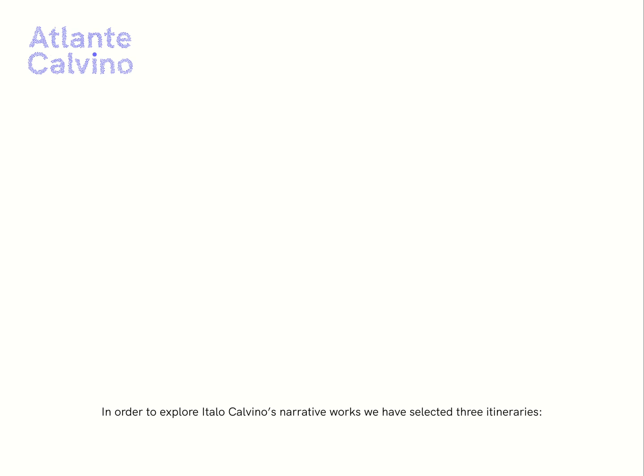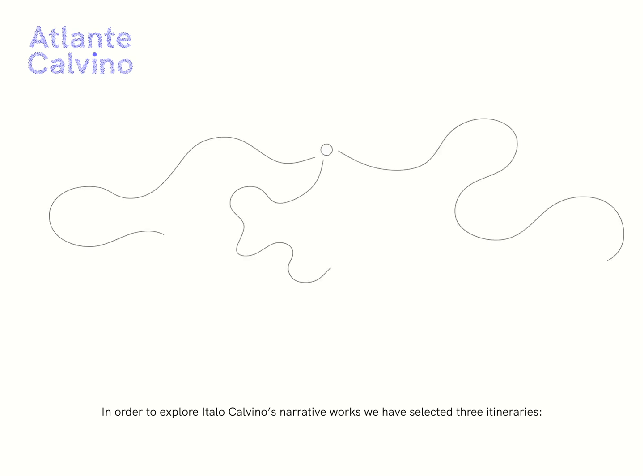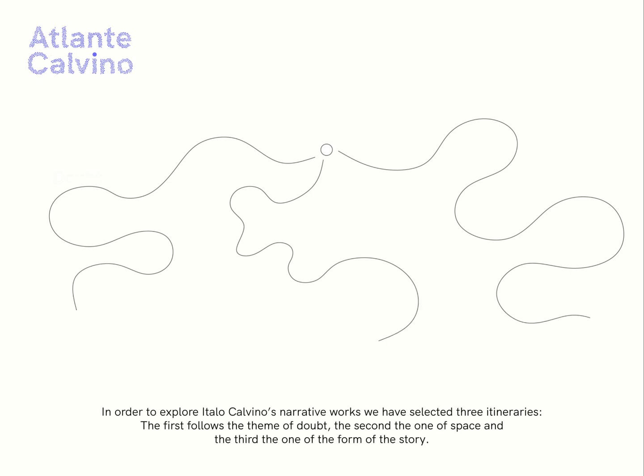In order to explore Italo Calvino's narrative works, we have selected three itineraries. The first follows the theme of doubt, the second the one of space, and the third the one of the form of the story.